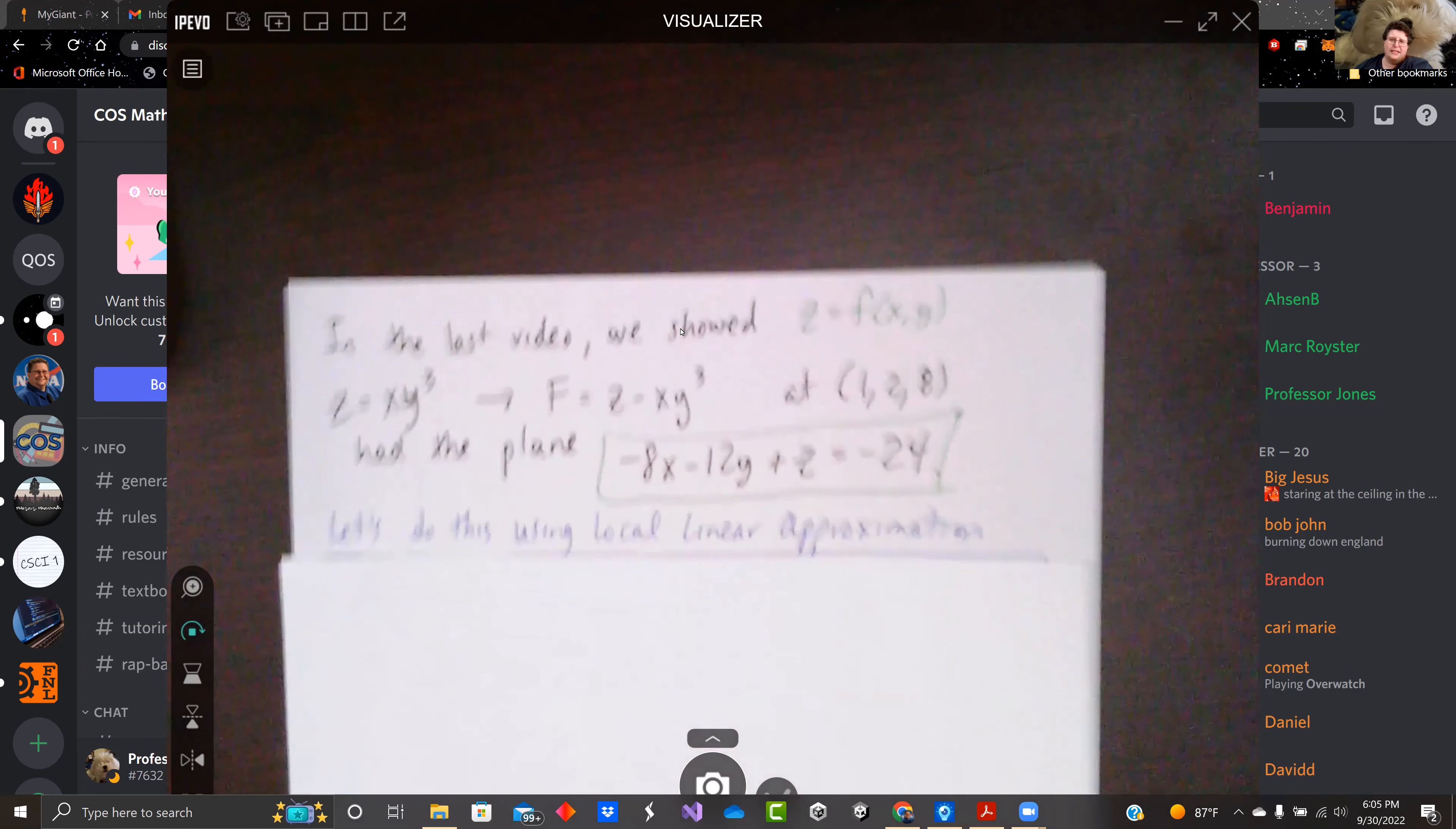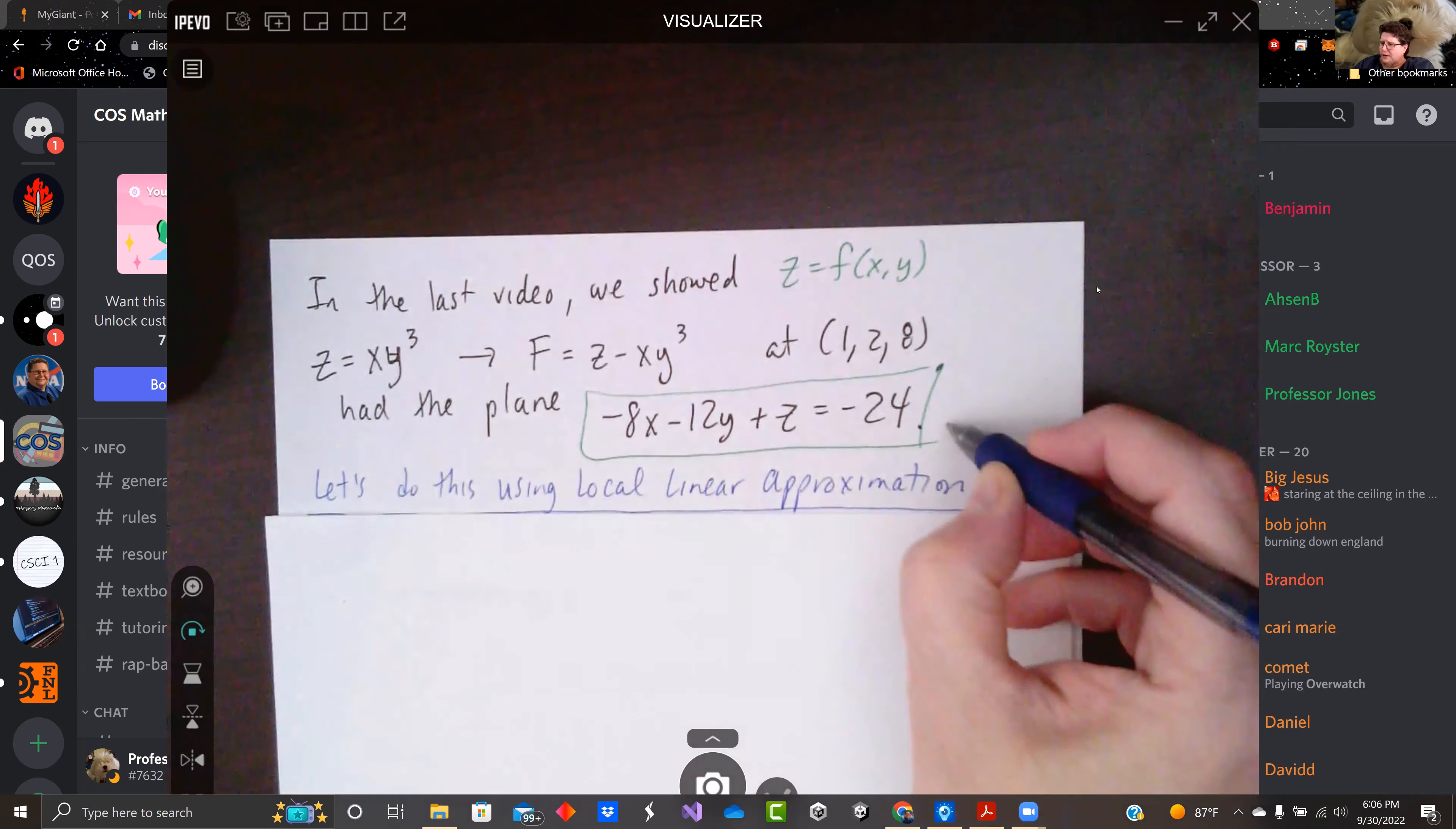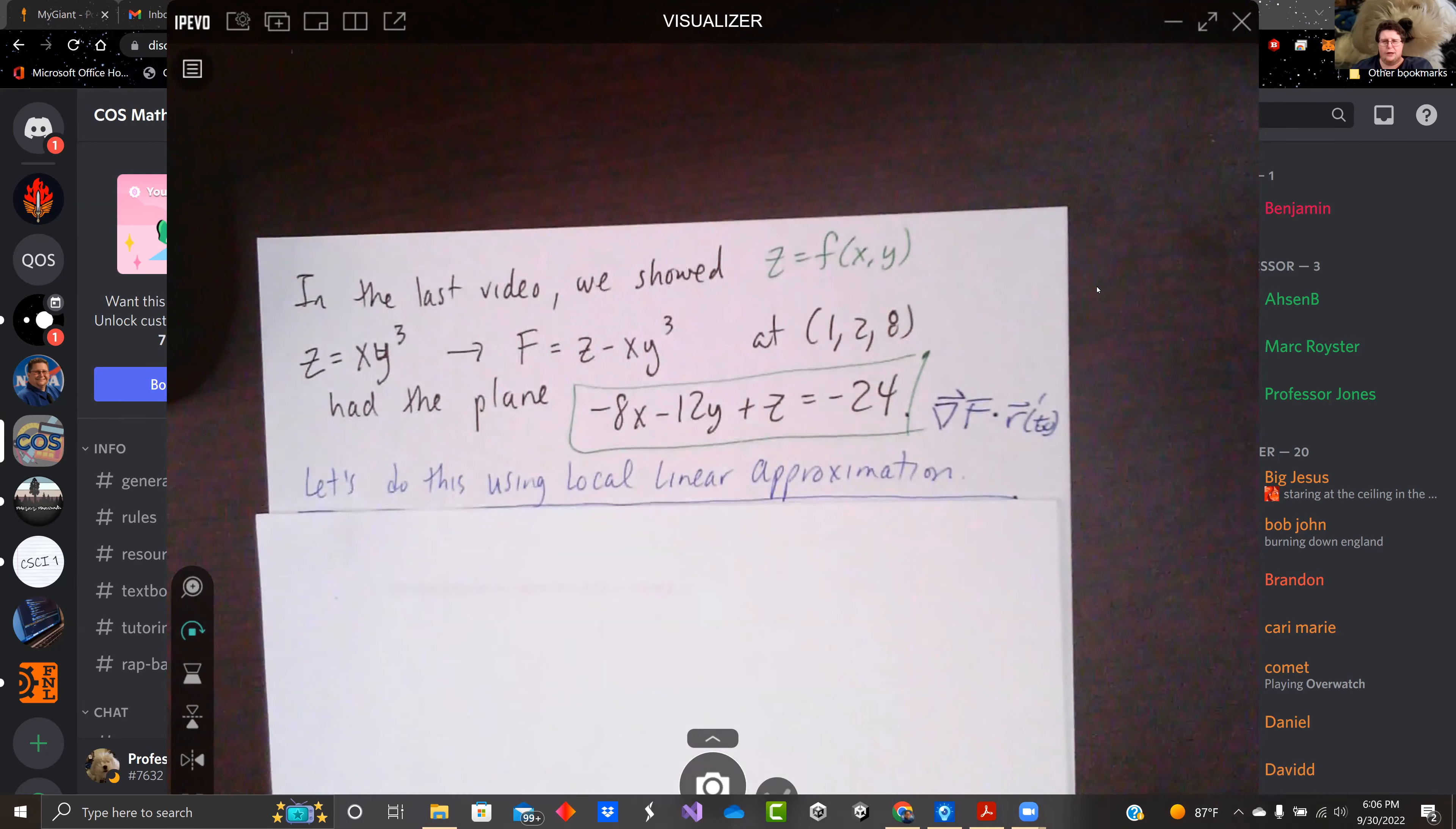I'll use the problem we used in the last video. We had z equals f(x,y). z was xy³. So that f was z minus xy³ at (1,2,8). And we showed that the plane was -8x - 12y + z = -24 by doing the gradient of f dotted with r at t₀, r prime at t₀. Let's do this using local linear approximation.